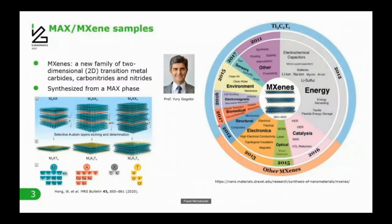After the etching and delamination, we end up with two-dimensional structures with varying transition metal carbides, carbon or nitrogen in between, and some termination layers. Although these materials are relatively new, there are already many possible applications for these structures, as shown on this plot.